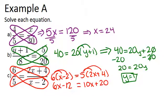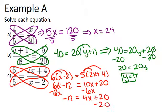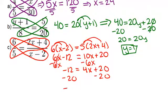Now continue to solve this. I'm going to minus 6x from both sides. Negative 12 equals 4x plus 20. Then minus 20 from both sides. And you get negative 32 equals 4x. And then divide both sides by 4 and get your answer that x equals negative 8.